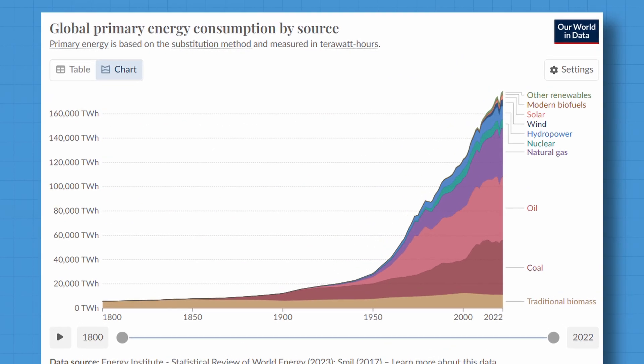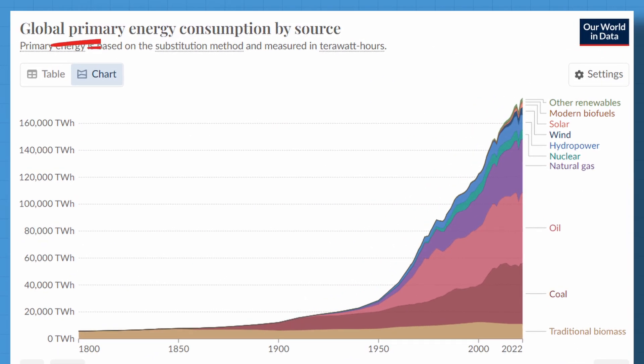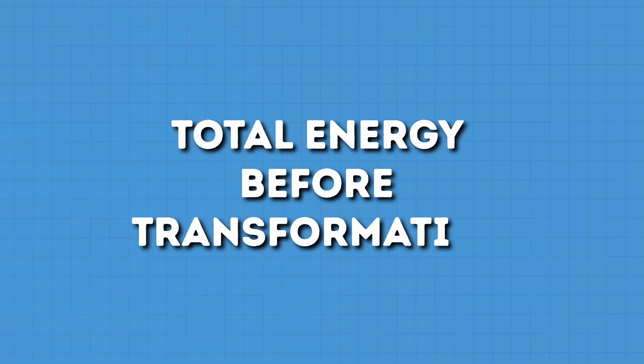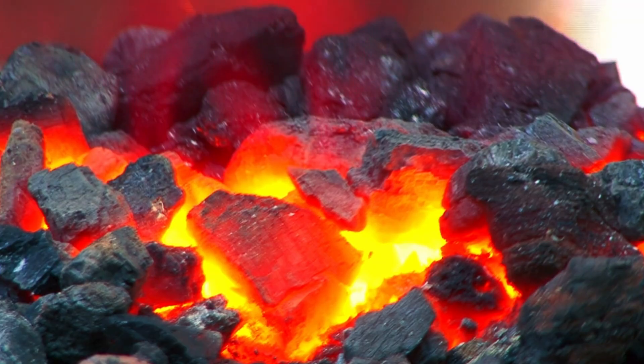Essentially, these graphs show what's called primary energy, which is the total energy before it's transformed — in the case of fossil fuels, before they are burned. The issue with showing primary energy is that we don't actually use or need all of that energy.